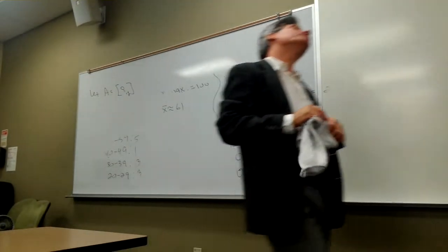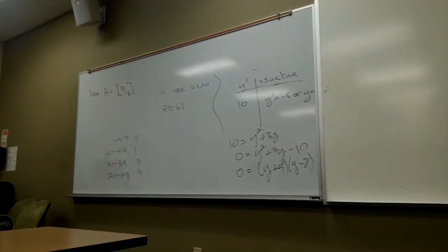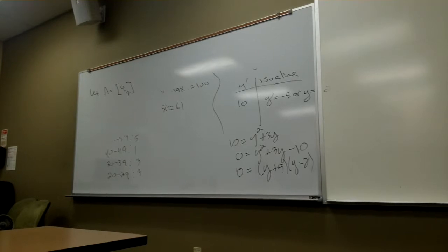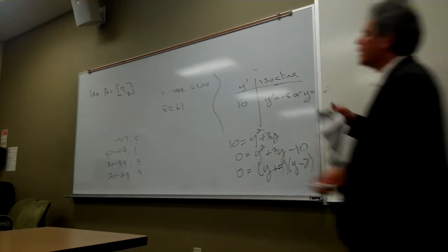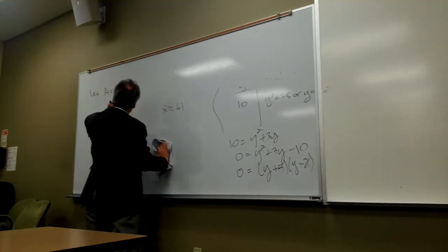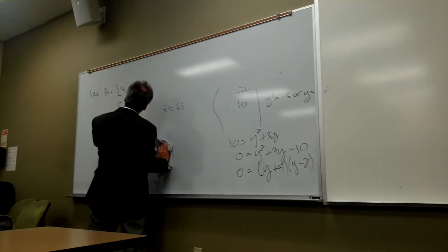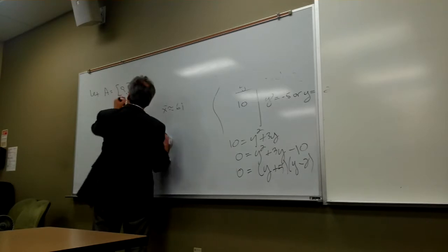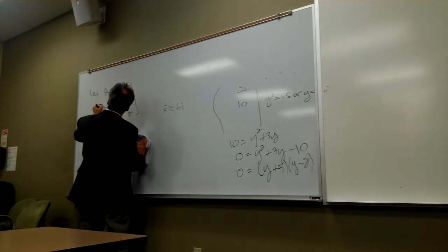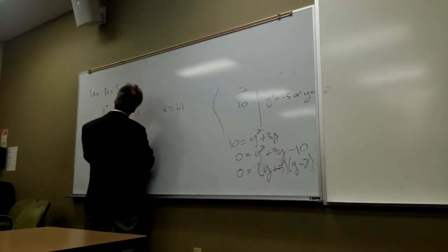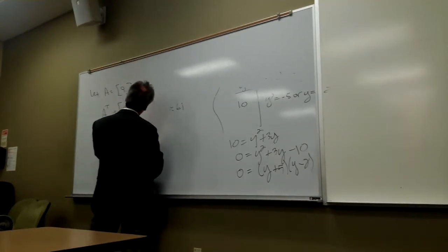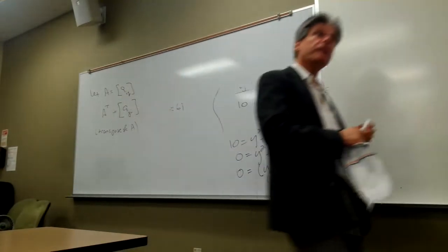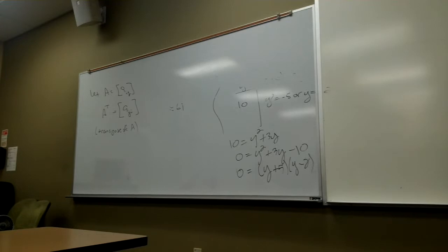So I have discussed our component-wise representation for functions. When I'm using the notation bracket a-sub-ij bracket, I'm going to talk about a matrix whose arbitrary ij entry is a-sub-ij. But there are times I like to take a matrix like matrix A and interchange its rows and columns. If I do that, that's what I'm going to refer to as the transpose of my matrix A.